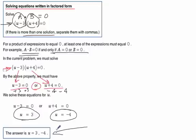So our answer is u = 3, -4. Either of those numbers will make the original equation true.